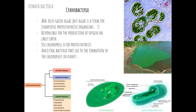The next group is cyanobacteria, sometimes called blue-green algae, but algae is correctly a term for eukaryotic photosynthetic organisms, so this should be called cyanobacteria. This is what we think is responsible for the production of oxygen on early Earth. Early Earth had a very anoxic environment, and once cyanobacteria evolved and started doing photosynthesis and releasing oxygen, we started having more oxygen accumulate in the atmosphere. They use chlorophyll A for photosynthesis, and we think an ancestral bacterium led to the formation of chloroplasts in plants through endosymbiosis.